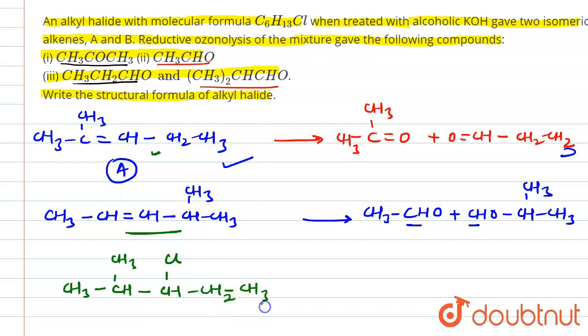This will be the product. By alcoholic KOH, what may happen? One alkene can be formed from here and one alkene can be formed here. So these two alkenes will be formed by the reaction of this compound with alcoholic KOH.